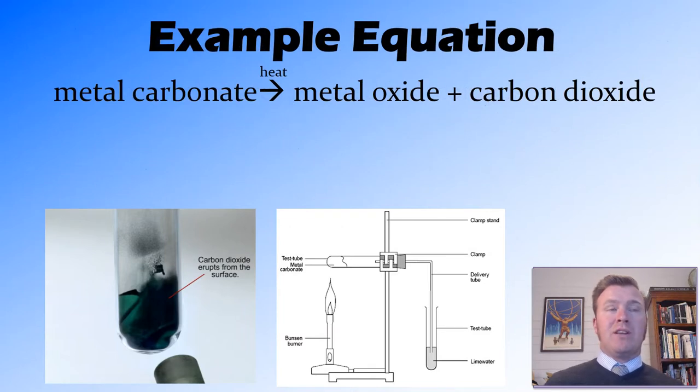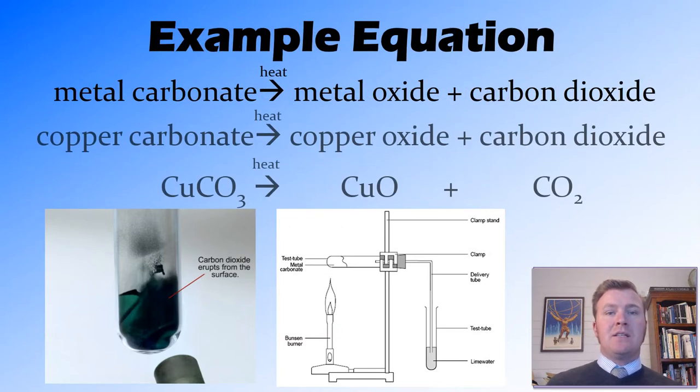Now an example of this equation is copper carbonate. Copper carbonate reacts in the presence of heat and forms copper oxide and carbon dioxide. This is quite a good reaction because copper carbonate is green while copper oxide is black, so you see a quite distinct color change when heating the copper carbonate.